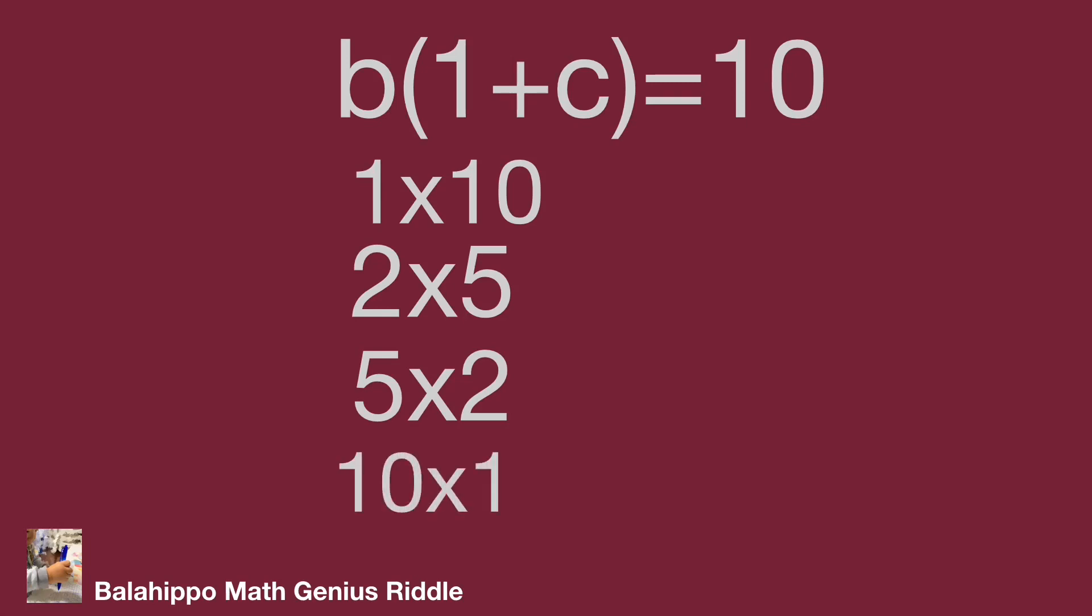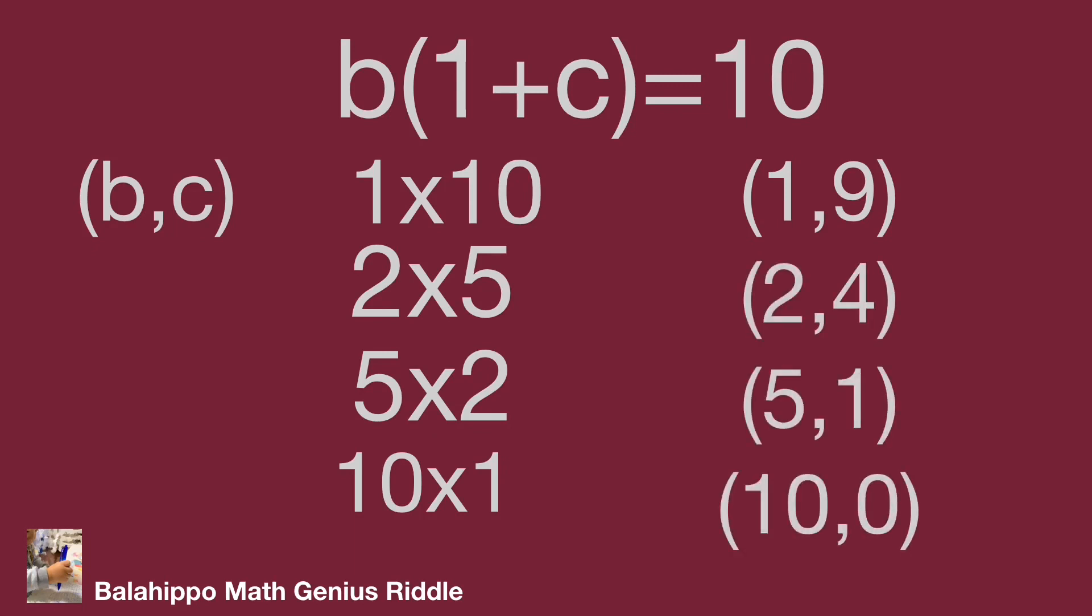We can get the number groups b and c: from 1 times 10 we get b equals 1 and c equals 9, from 2 times 5 we get b equals 2 and c equals 4, and the other two groups are b equals 5 and c equals 1, and b equals 10 and c equals 0. But 10 and 0 cannot meet the positive integer criteria.